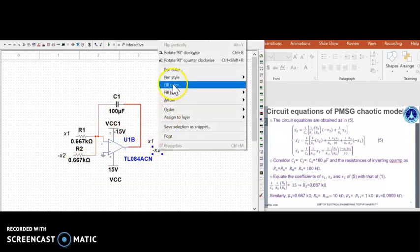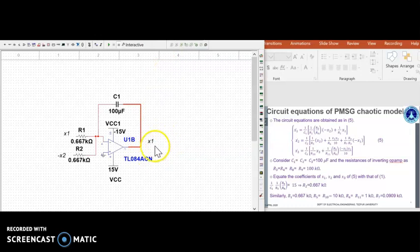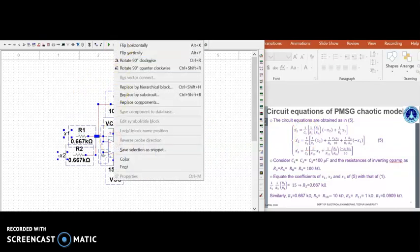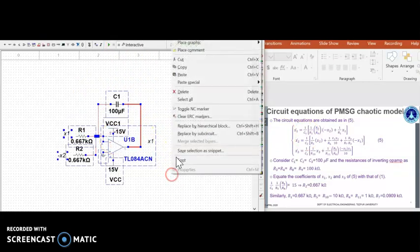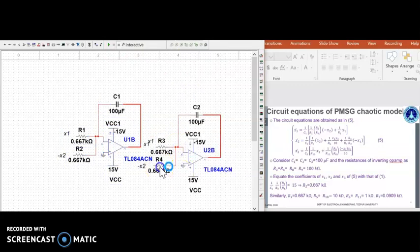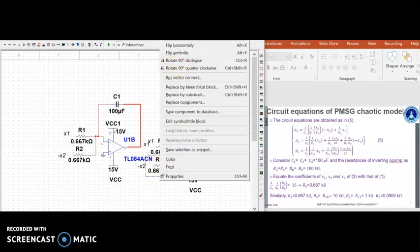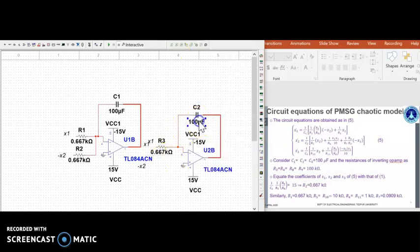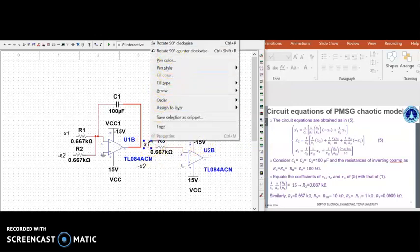Now, what we can see is that there is a negative value of x1 is also required. As you can see in equation 5, minus x1. So, what we will do, we will insert an inverting amplifier. Copy and paste somewhere here. So, this is not required, we will delete it. This is not required, we will delete it. This one is not required, so we will again delete it.